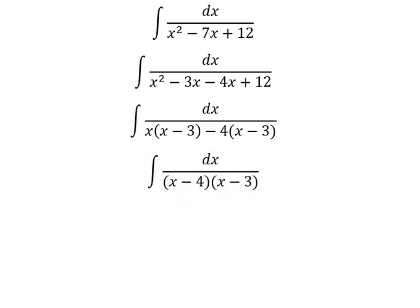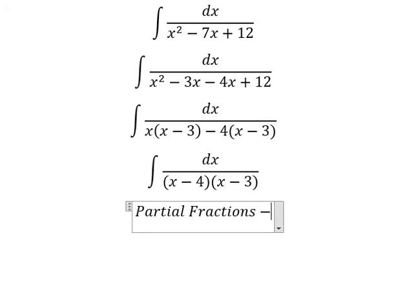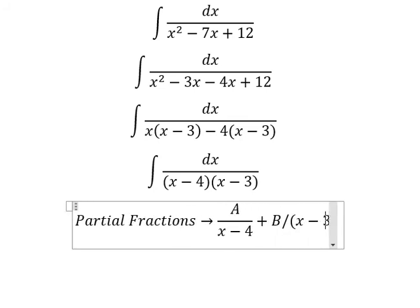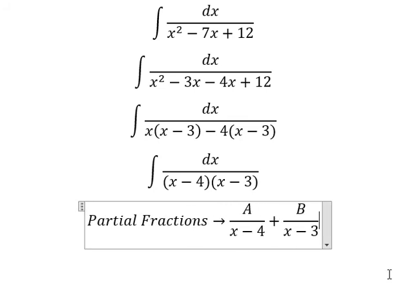Now we can use partial fractions. We write this as capital A over (x-4) plus capital B over (x-3). Next we find the common denominator.